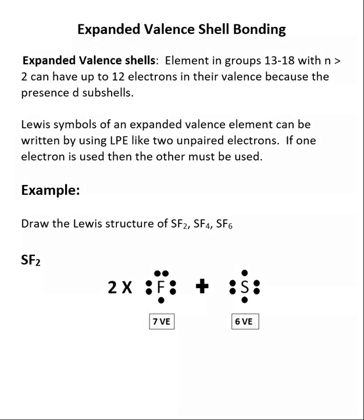Thus far when we've been drawing Lewis structures, we've said that atoms mostly want to have eight electrons around them. Now what we're going to talk about is the possibility of having more than eight, and this is called expanded valence shell bonding. Elements in groups 13 through 18 — the P block all the way to the right on the periodic table — with n greater than 2. The very top row of the P block is n equals 2, and those tend to very much follow the octet rule. We drop down one to n equals 3.